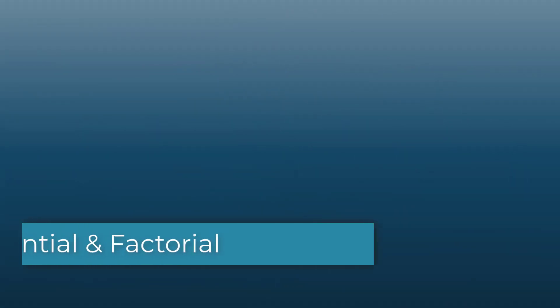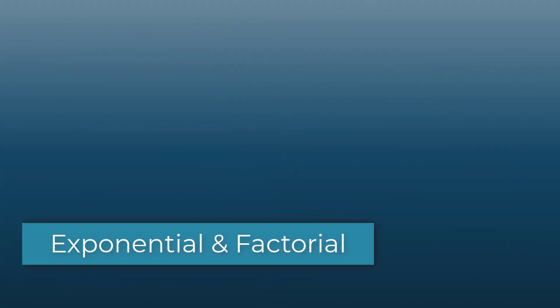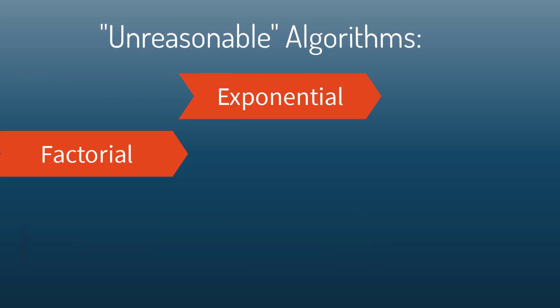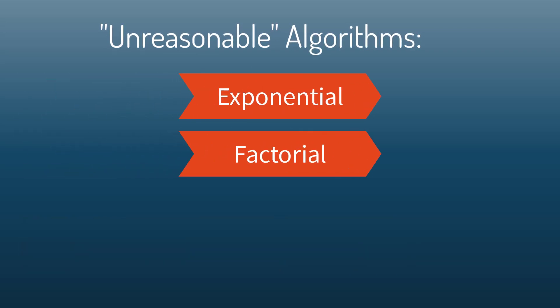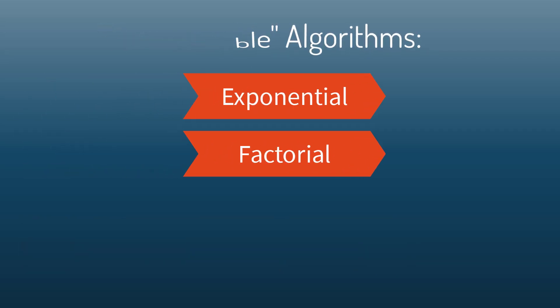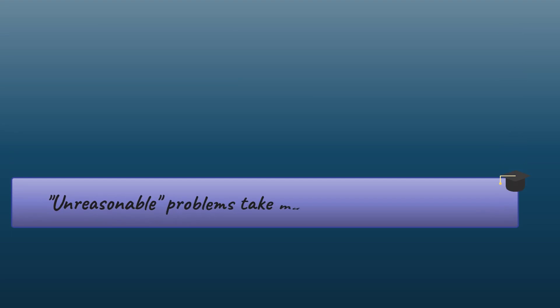Unreasonable time algorithms are those with exponential or factorial efficiencies. As the input gets bigger, they require many steps very, very quickly. The amount you need to understand these concepts for APCSP isn't that much — I'll cover it here and give some common examples.